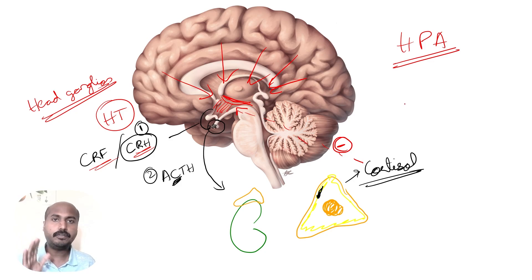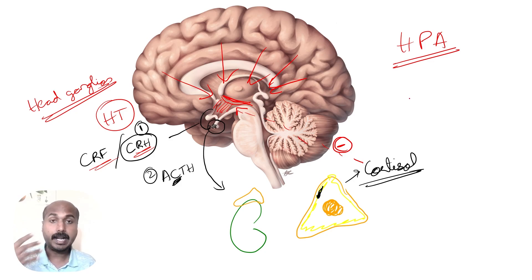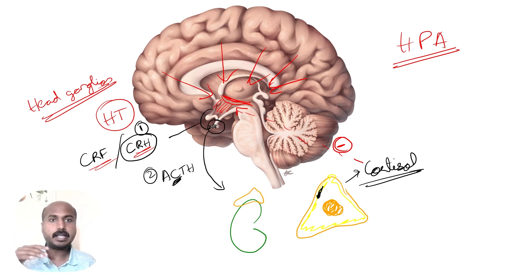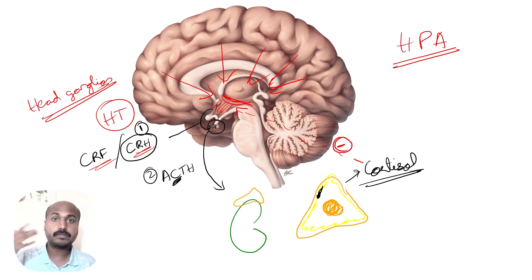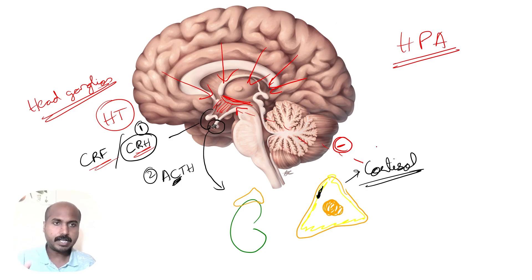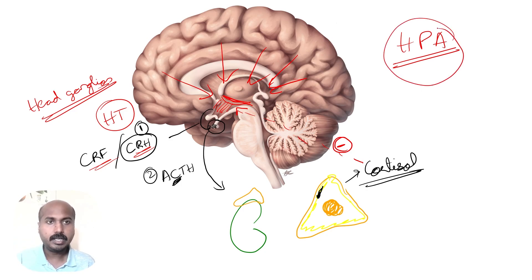Reduced HPA axis activity can cause insufficiency, leading to an Addisonian crisis or adrenal insufficiency. Alternatively, if the HPA axis is overly sensitive, there will be an increased amount of cortisol in the blood, causing various dysfunctions in the body.